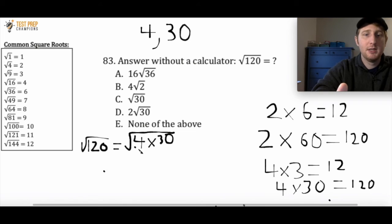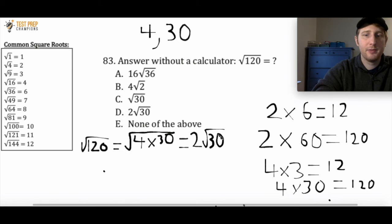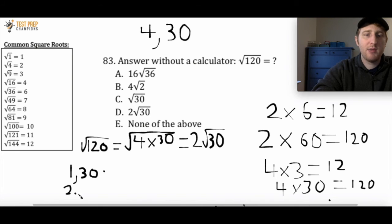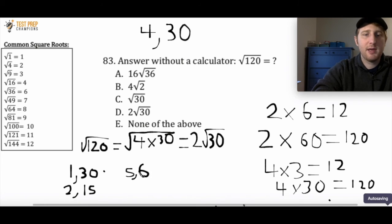We know the square root of 4 is 2, so I can write 2 times the square root of 30. Now are there any other steps? To check, I need to think about pairs of numbers that multiply to give me 30: 1 and 30, 2 and 15, 5 and 6. But none of these numbers appear underneath the square roots on my common square roots list. So this is the final answer — there's nothing else to simplify. The correct answer is D.